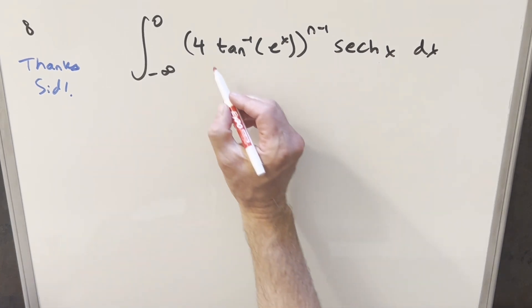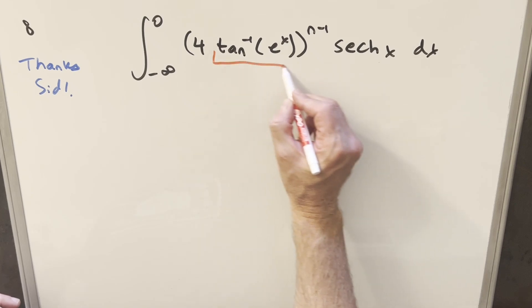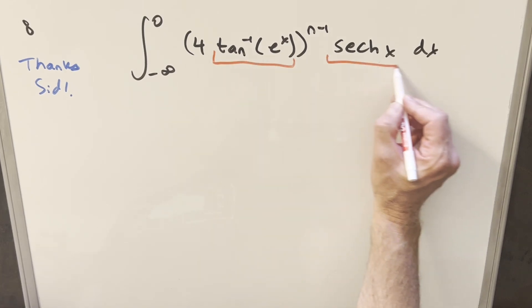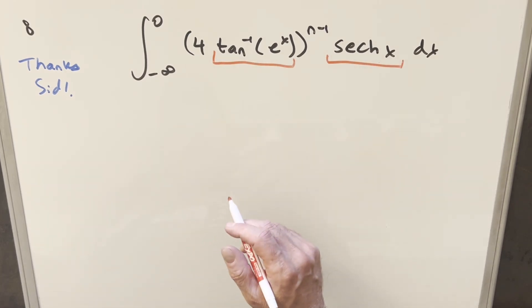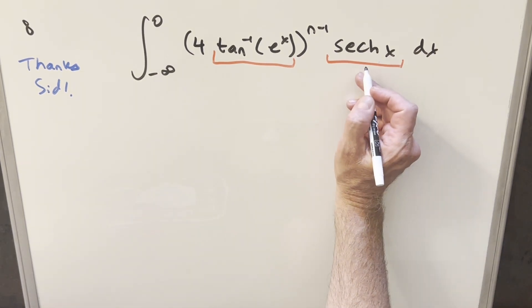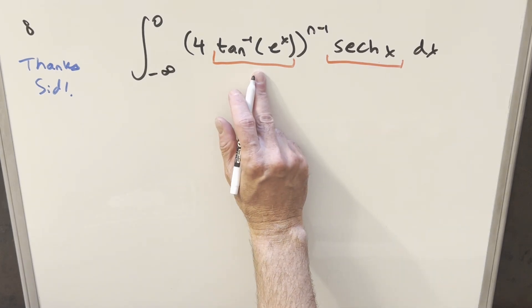Right away the first thing I notice is that we have arctan of e to the x here and hyperbolic secant over here. I know there's a relationship with the derivative and the integral. I always forget exactly what it is. I know it's basically that when you take the integral of this you get back this in some form.